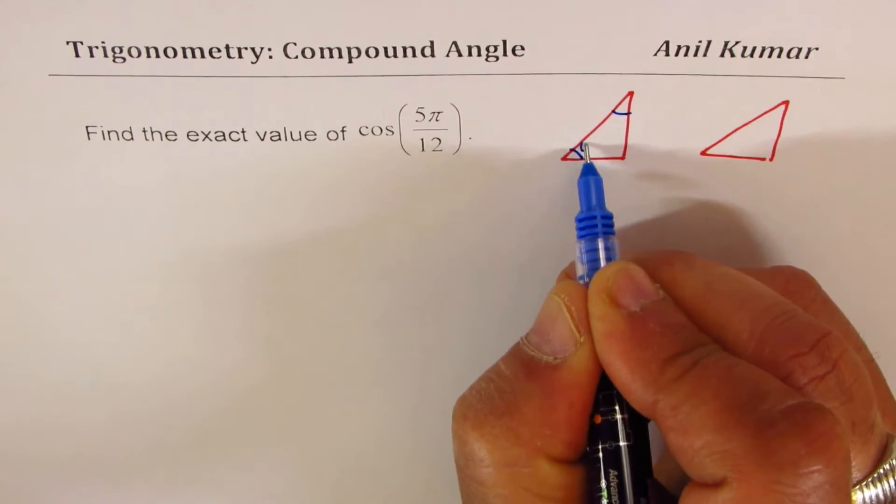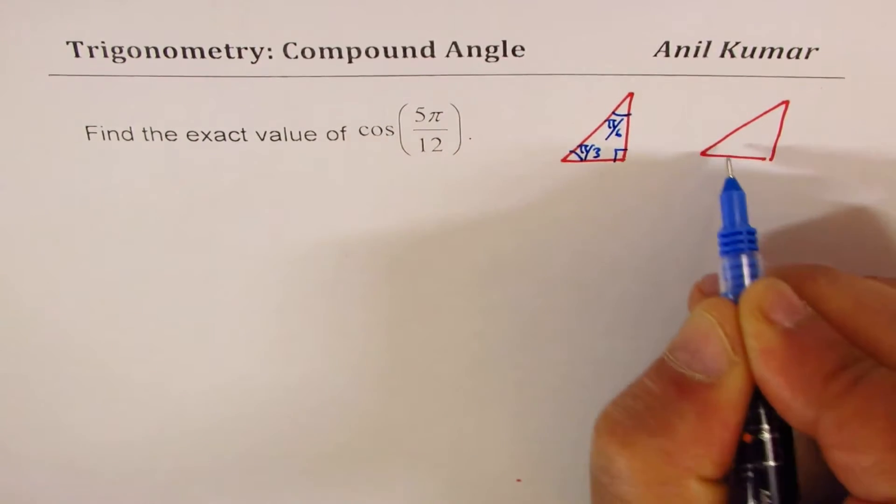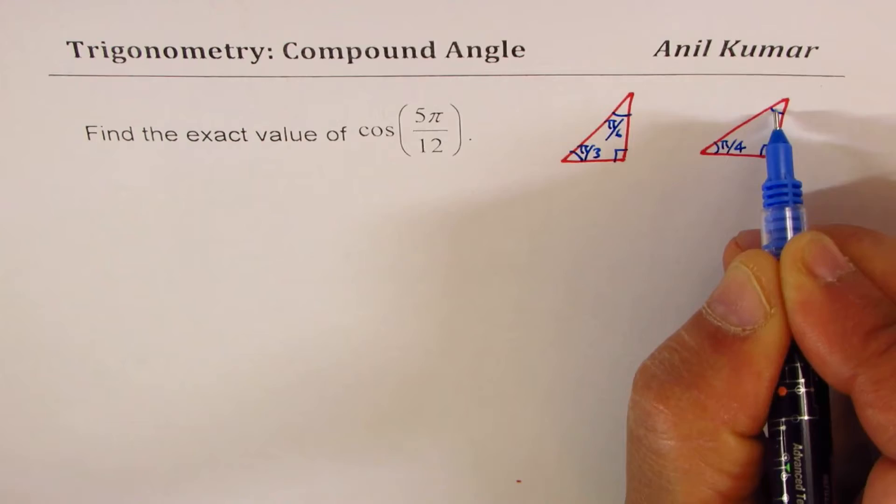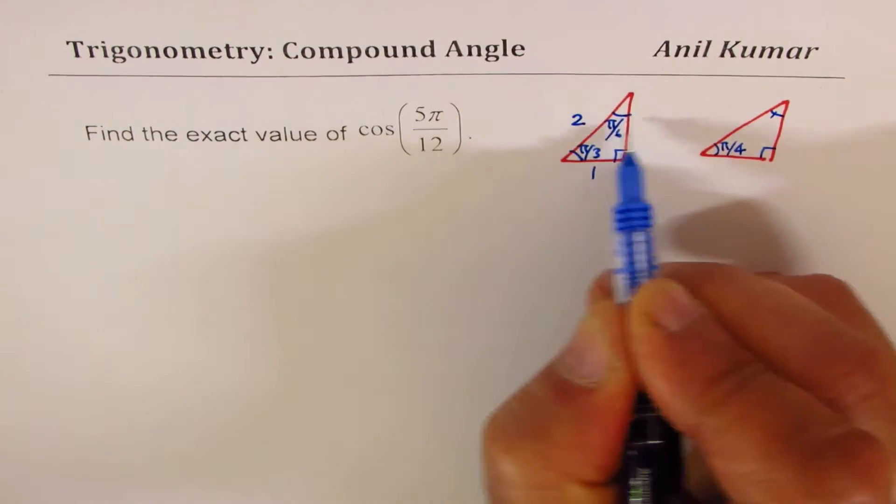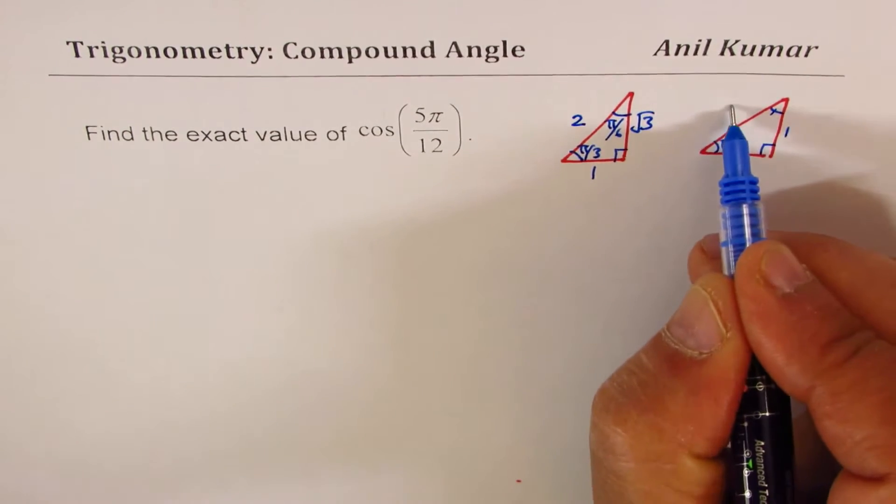You know one special triangle is π/3, π/6, and π/2. The other one is π/4 and π/2, this is also π/4. You can say the sides are 1, 2, √3 and the sides for this are 1, 1, √2.